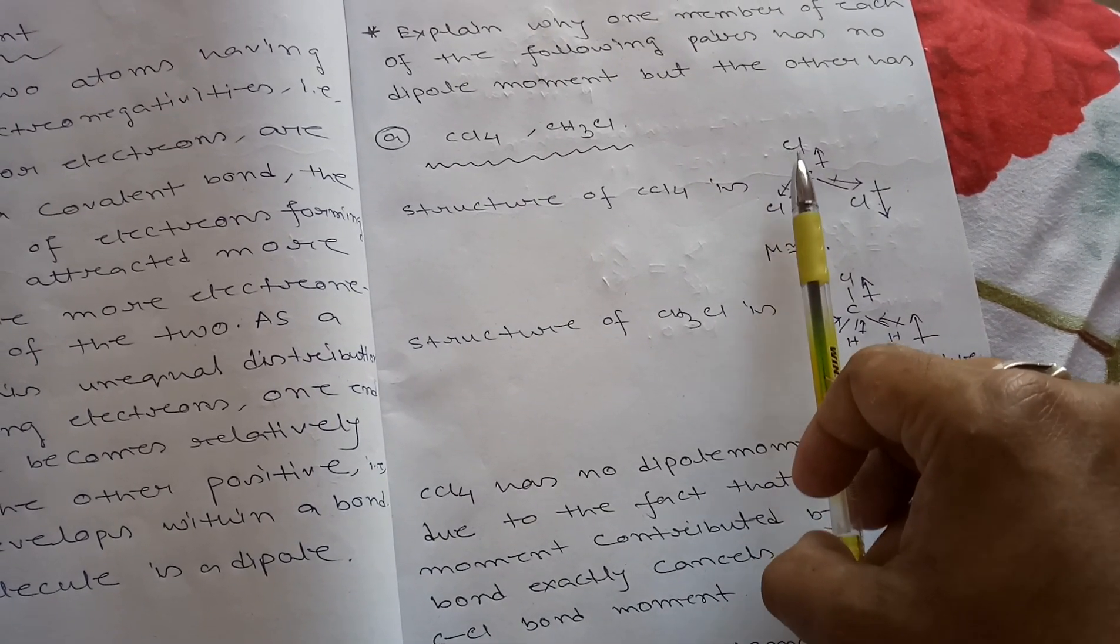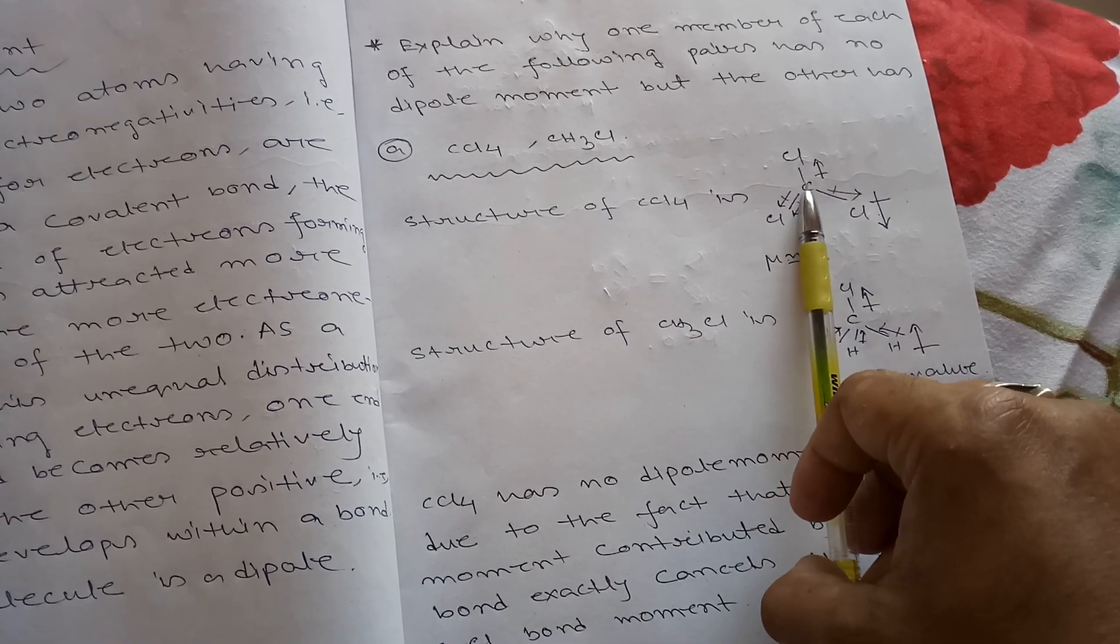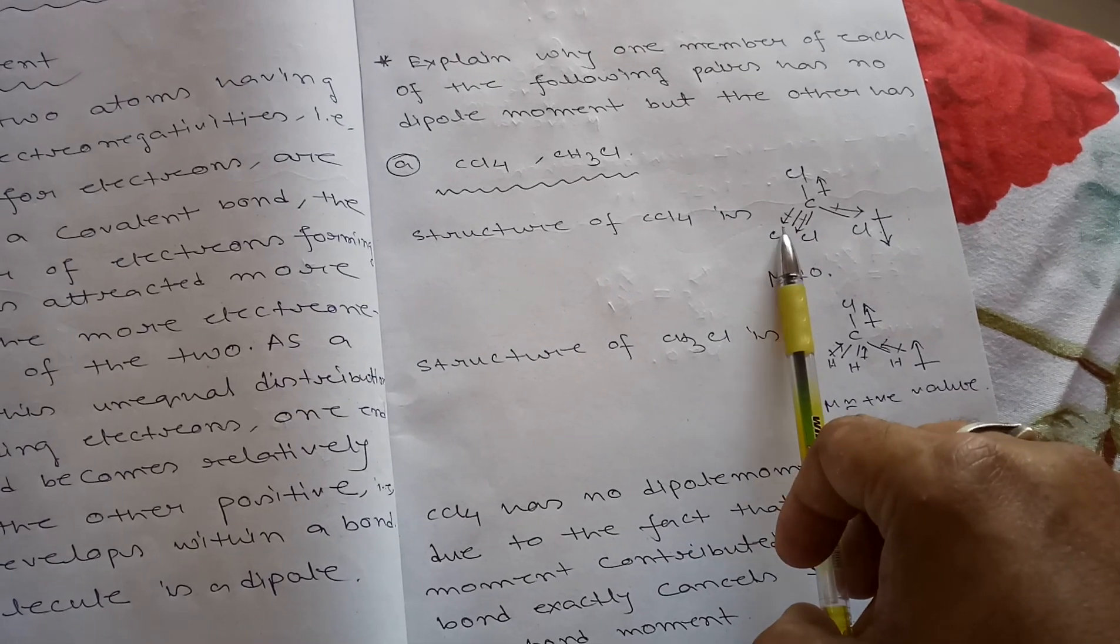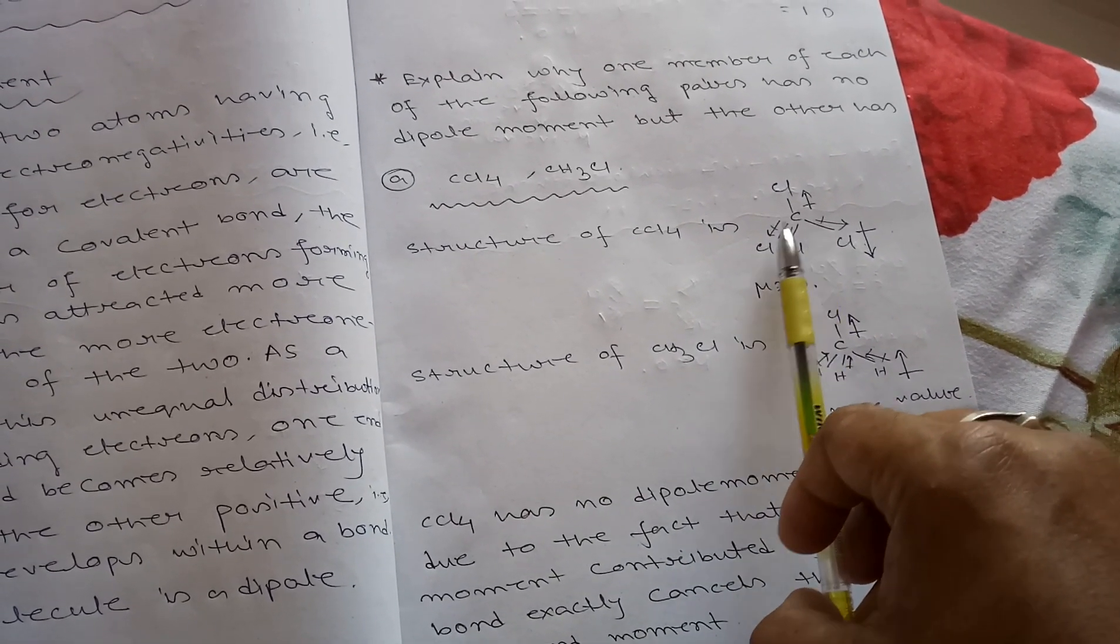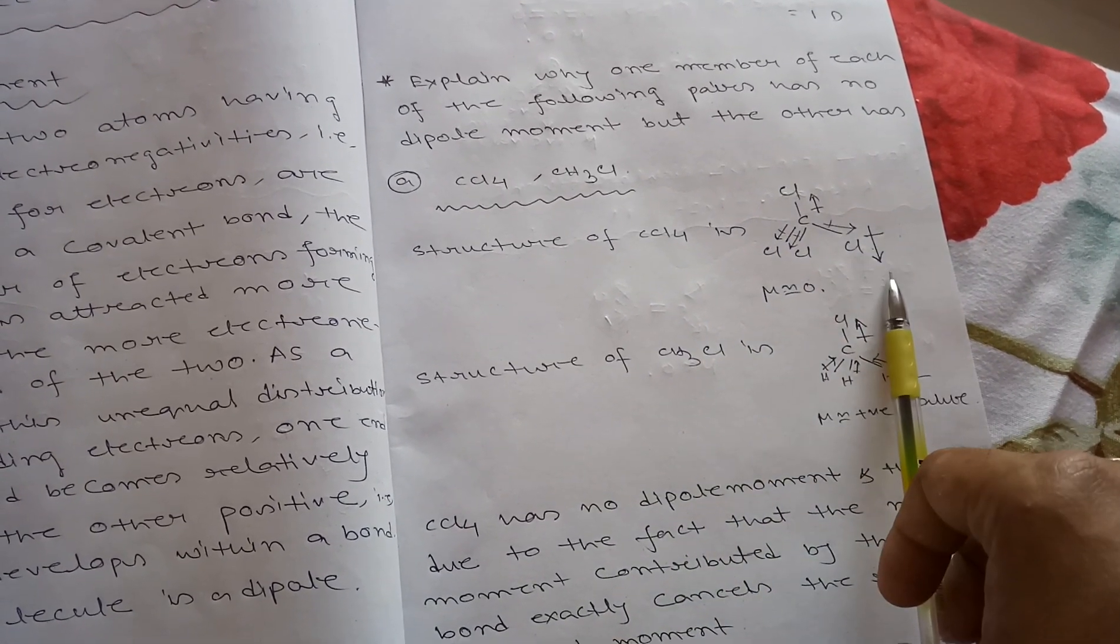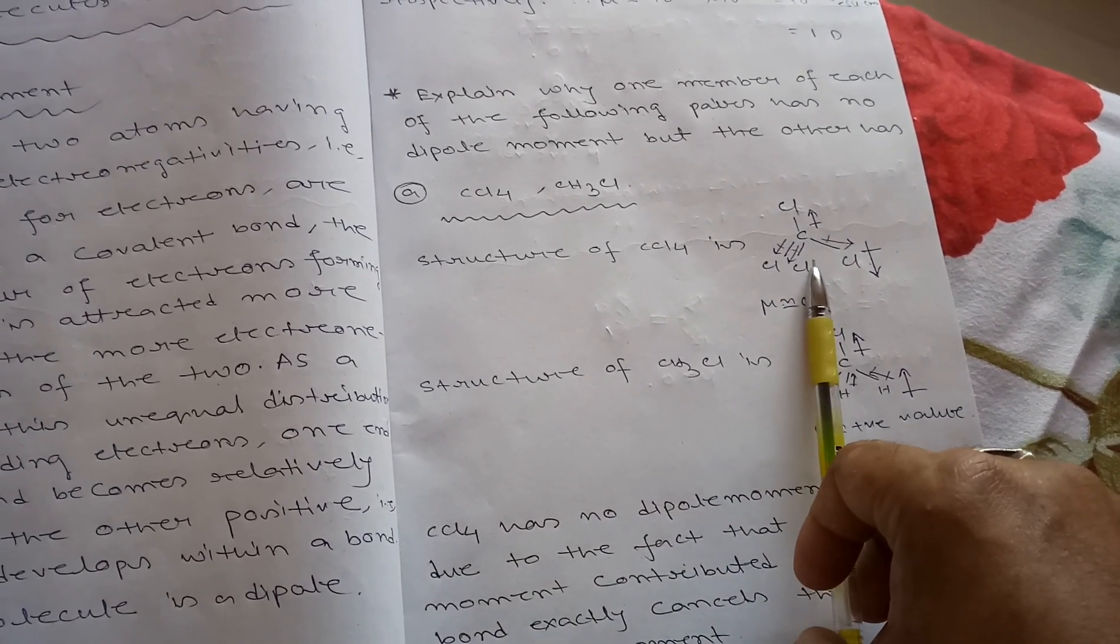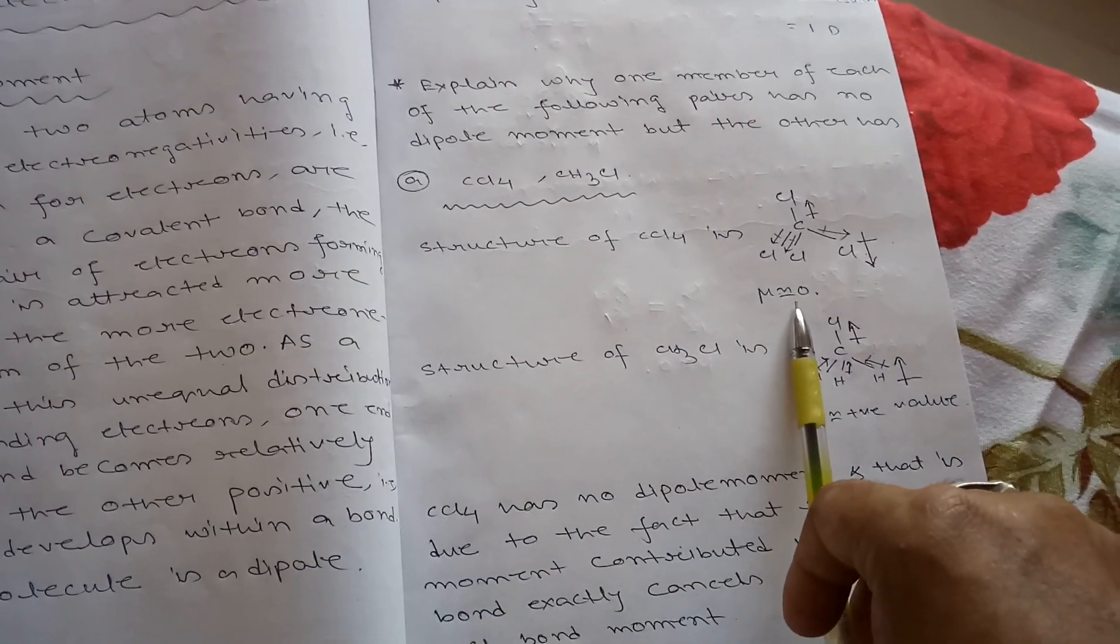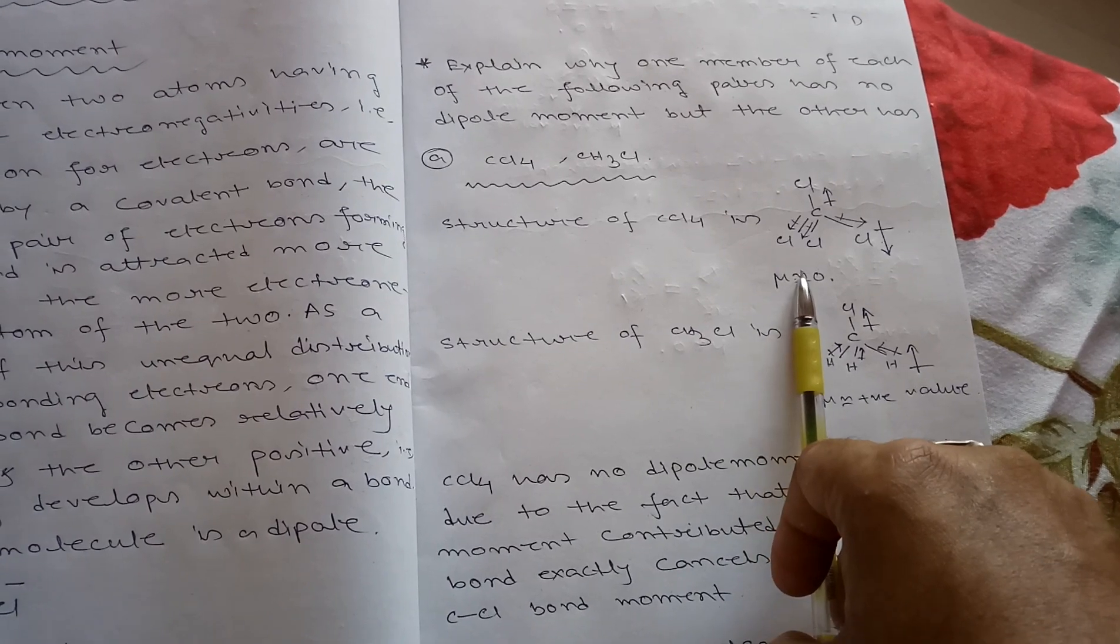Between carbon and chlorine, chlorine has greater electronegativity than carbon. That's why here bond electrons move towards chlorine, and these three chlorines also attract these bond electrons. The resultant moments cancel each other. That's why it has μ = 0. CCl4 has no dipole moment; it is a non-polar molecule.